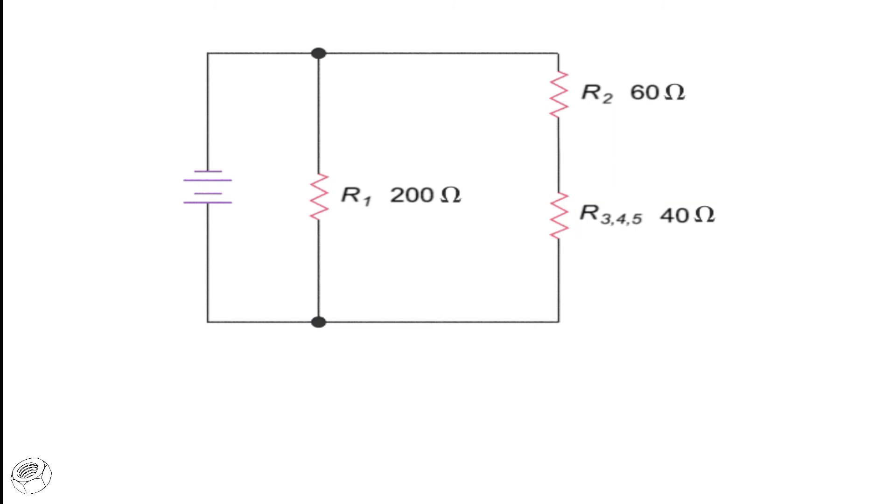Now, we have further reduced the circuit to two resistors in series, R2, and the equivalent resistance of the R3, R4, and R5 resistors. Again, because we have resistors in series, we can simply add the 60 ohms to the 40 ohms to get a combined value of 100 ohms.